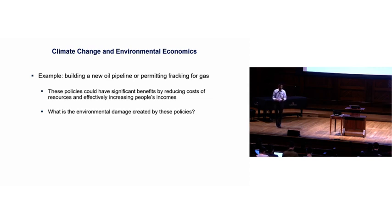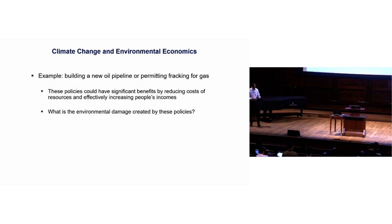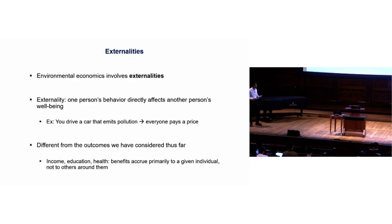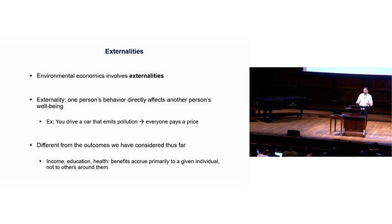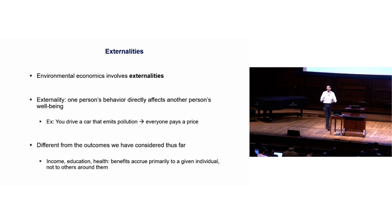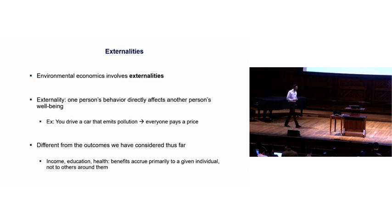Environmental economics is fundamentally about externalities — a case where one person's behavior directly affects another person's well-being or utility. A concrete example: if you drive a car that emits pollution, that doesn't have a big cost for you yourself. The bigger cost is that it affects everyone else in society. If you're just trying to maximize your own well-being, you may drive a car that emits a lot of pollution, but we don't want to let you do that because you're harming lots of other people. Another simple example: if you're playing loud music in your dorm room, you may not internalize the fact that it's affecting your roommates.